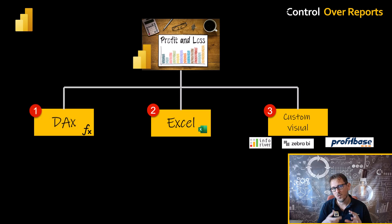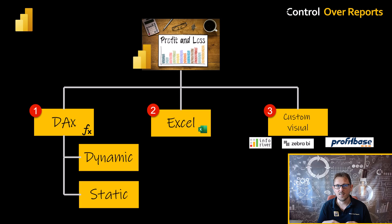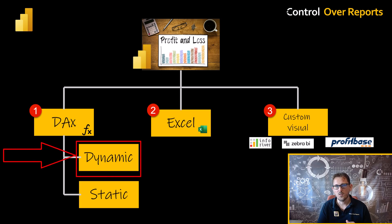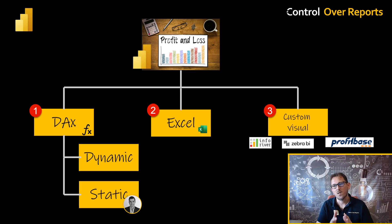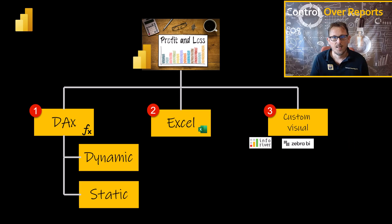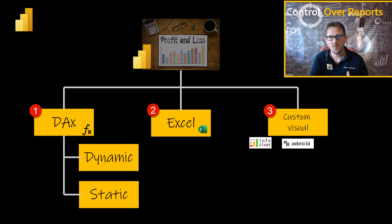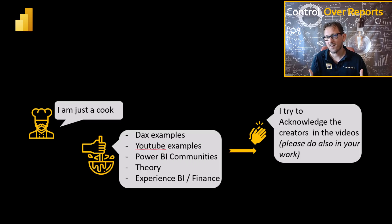In the DAX approach, you have the difference between dynamic and static. Dynamic means that you can drill down, drill through, and stuff like that. And static — you have to think about the solution Enterprise DNA's Sam McKay has given you. It's a beautiful P&L, but it's a little bit more static. In those solutions I was still missing something, so I acted like a cook and prepared my own P&L.